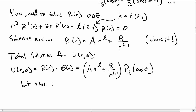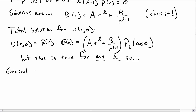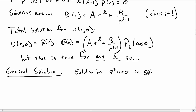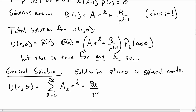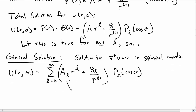Summarizing, the general solution to the Laplace equation in spherical coordinates is: u(r, θ) = Σ(l=0 to ∞) [a_l · r^l + b_l / r^(l+1)] · P_l(cosθ), where P_l are the Legendre polynomials. The coefficients a_l and b_l depend on l and are what we need to solve for.